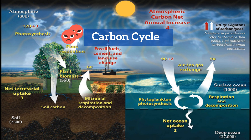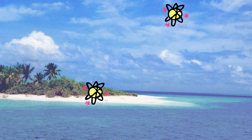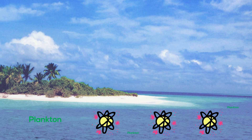Up next is the ocean. The ocean has the greatest exchange of cycled carbon and stores a large amount of carbon. The ocean absorbs carbon in the form of carbon dioxide, and also has a large amount of plankton that absorbs carbon dioxide for photosynthesis.